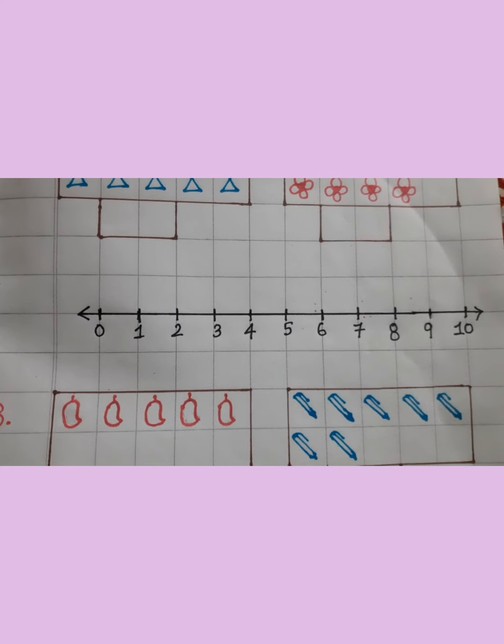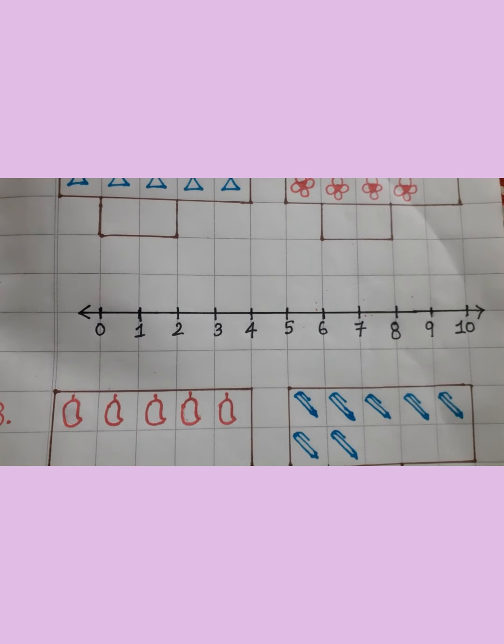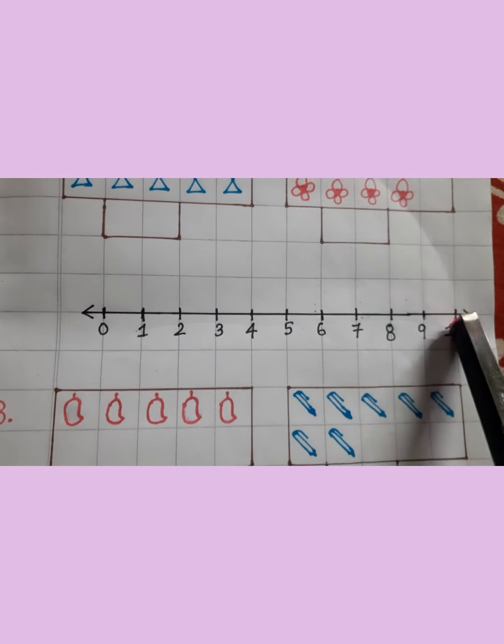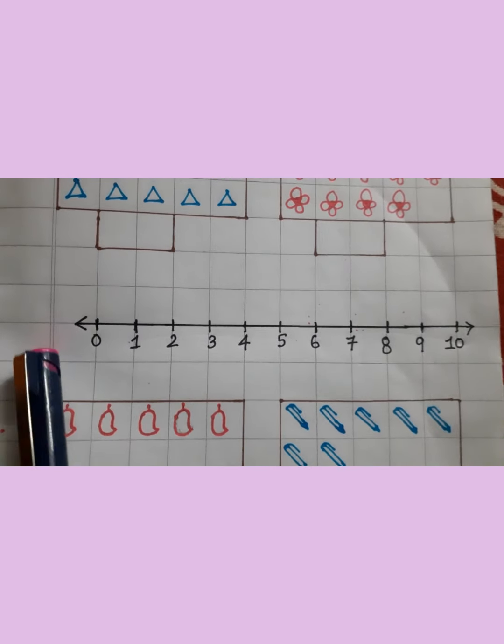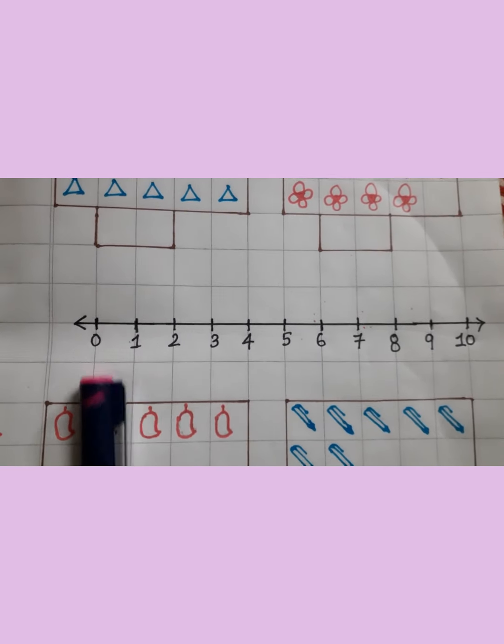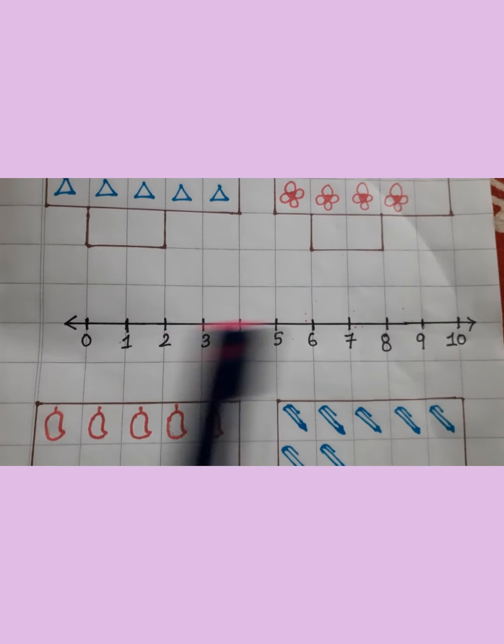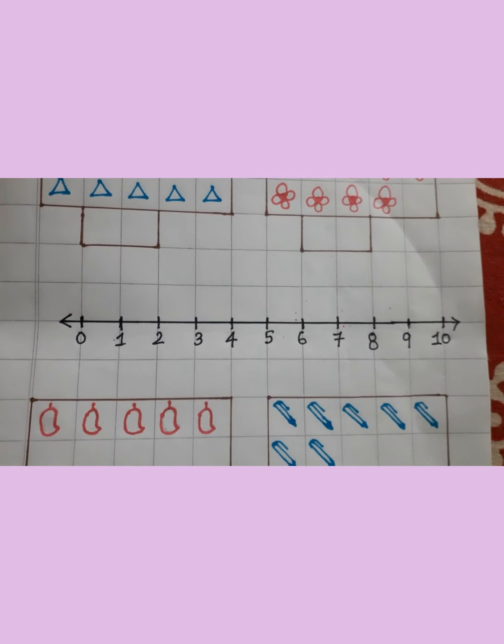Let's focus on this line. You can see we have drawn one straight line and we have written some numbers. It is starting with 0 and going up to 10.